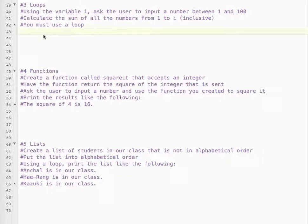And so it says, using the variable i, ask the user to input a number between 1 and 100. Calculate the sum of all numbers from 1 to i inclusive, that means including the number that was input. You must use a loop. Okay, so let's get started. So i, raw input, please enter a number from 1 to 100.